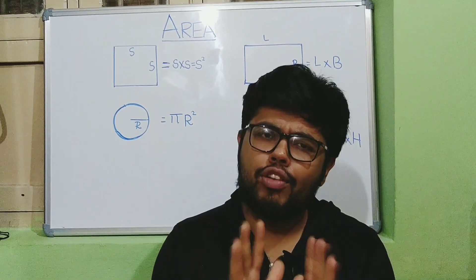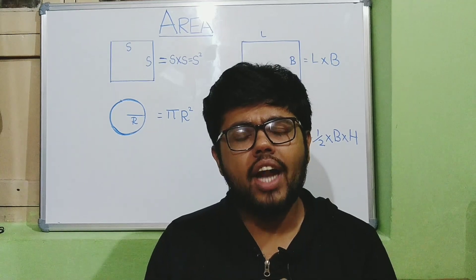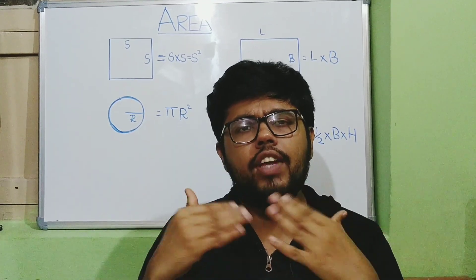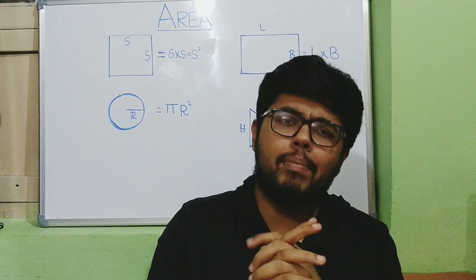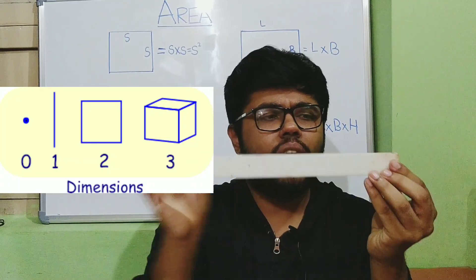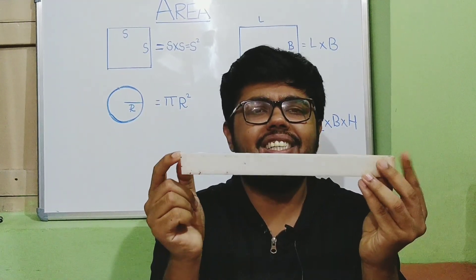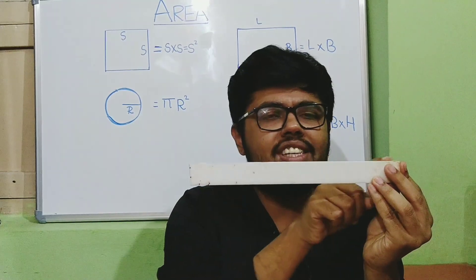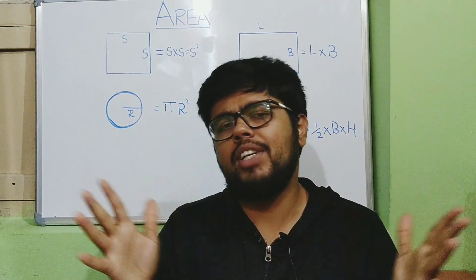Now, before going into the concepts of area, let us discuss something called the dimensions and the various shapes that we regularly see and come across in our life. First of all, dimension. So now, I have this scale. I'll start from here and I'll come and end here. So, this is one dimension. You can just say it as an X dimension.